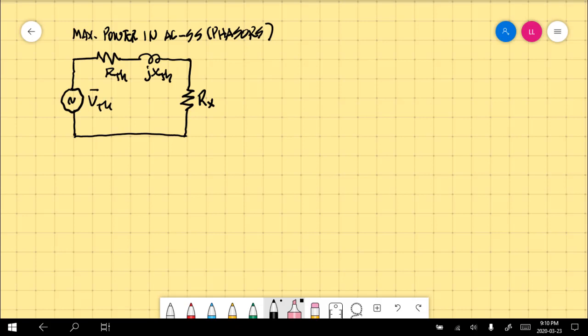We want maximum power in that external resistor. We call that the external power Px. What should be the value of that external resistor to drain maximum power out of that circuit? That is the question that we need to answer right now.